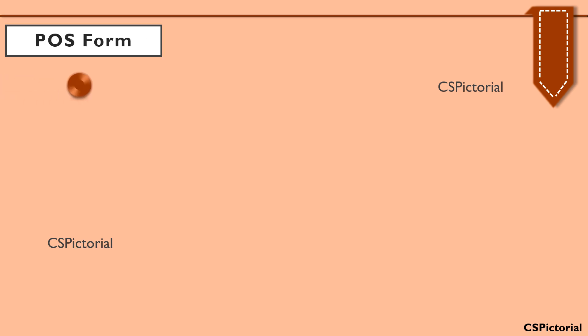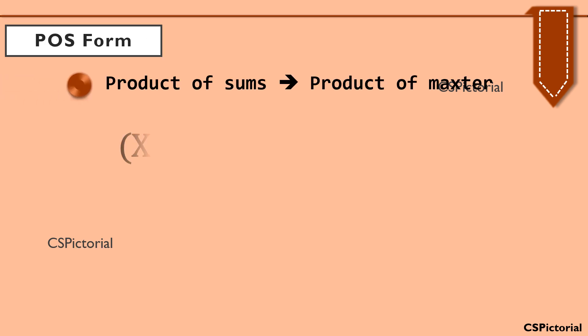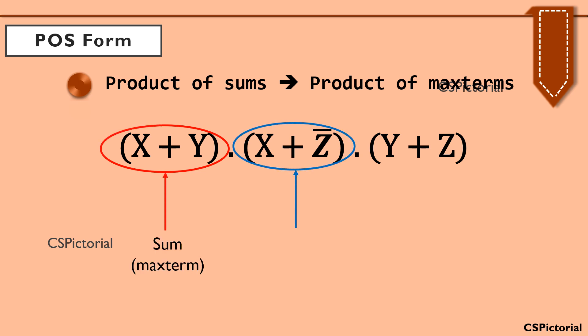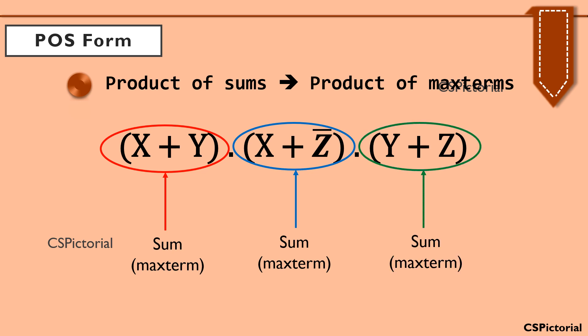POS stands for product of sums, or product of max terms. Let us consider this Boolean expression. What you could understand at just the first view itself is that the expression is multiplying up a few sum terms. Here, each term like x plus y is a sum term or max term. x plus z bar is another sum term or max term, and y plus z is another max term. This expression is finally finding the product of all the sum terms, as the name tells you — product of sums.